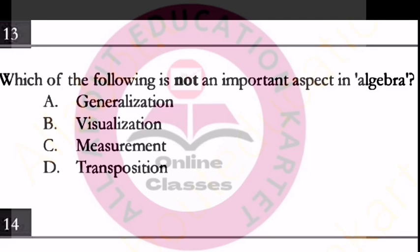The question asks what is NOT an important aspect in algebra. Measurement is not an important aspect of algebra — measurement is an aspect of geometry. Generalization, visualization, and transposition are important aspects of algebra.